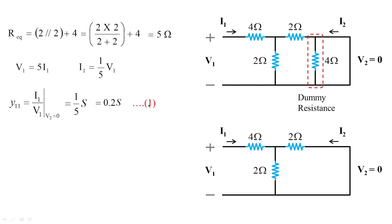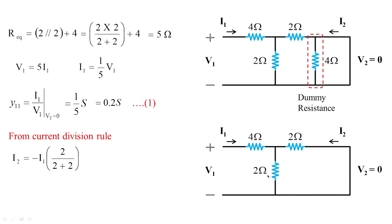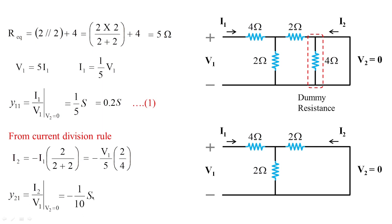From the current division rule, I want to get I2 in terms of V1. I2 in terms of I1 equals minus I1, and since 2 and 2 are in parallel the opposite is also 2, giving 2 by 2 plus 2, which equals 2 by 4. Substituting I1 equals V1 by 5, we get Y21 equal to minus 1 by 10 Siemens. Note: there is a sign error in the working — the correct value is minus 1 by 10 Siemens.